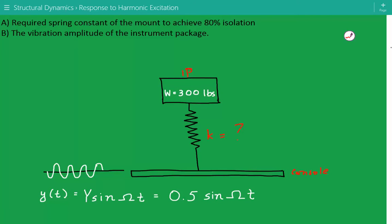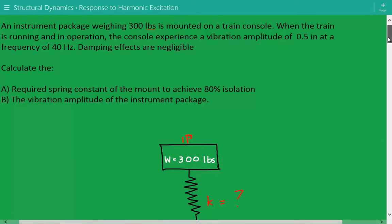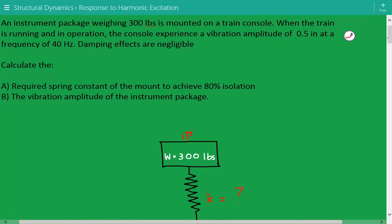The console is vibrating—the base is vibrating, basically—and we describe it mathematically as the amplitude y times sine of capital omega t. So the amplitude is 0.5 inches.